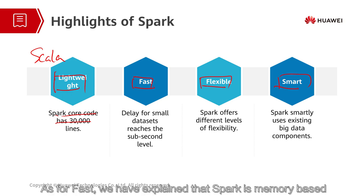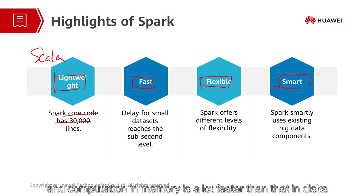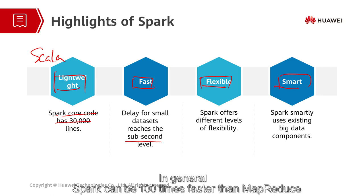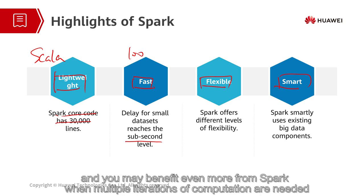As for fast, we have explained that Spark is memory-based, and computation in memory is a lot faster than that in hard disks. Here we can see Spark has sub-second level latency for small datasets. In general, Spark can be 100 times faster than MapReduce. And you may benefit even more from Spark when multiple iterations of computation are needed.